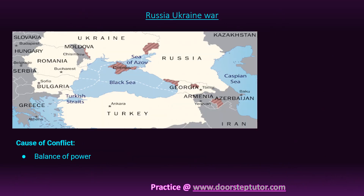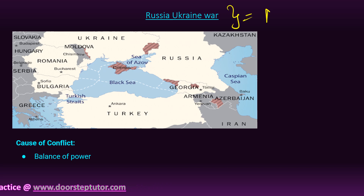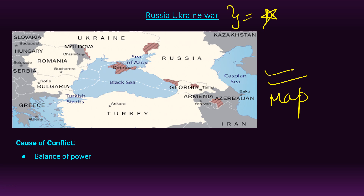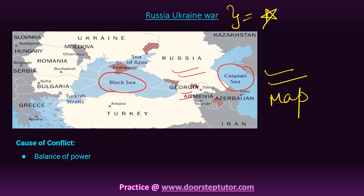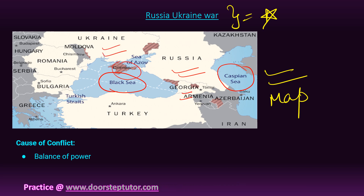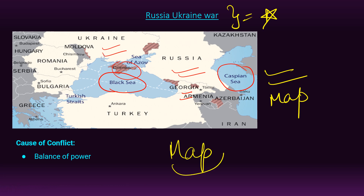Another major important topic is the Russia-Ukraine war. Here is the map - you need to remember the location of the Black Sea and the Caspian Sea, as they are important from an exam point of view. Also remember countries bordering these seas, the location of Georgia, Crimea, and Ukraine. The map is very important when studying the Russia-Ukraine war.